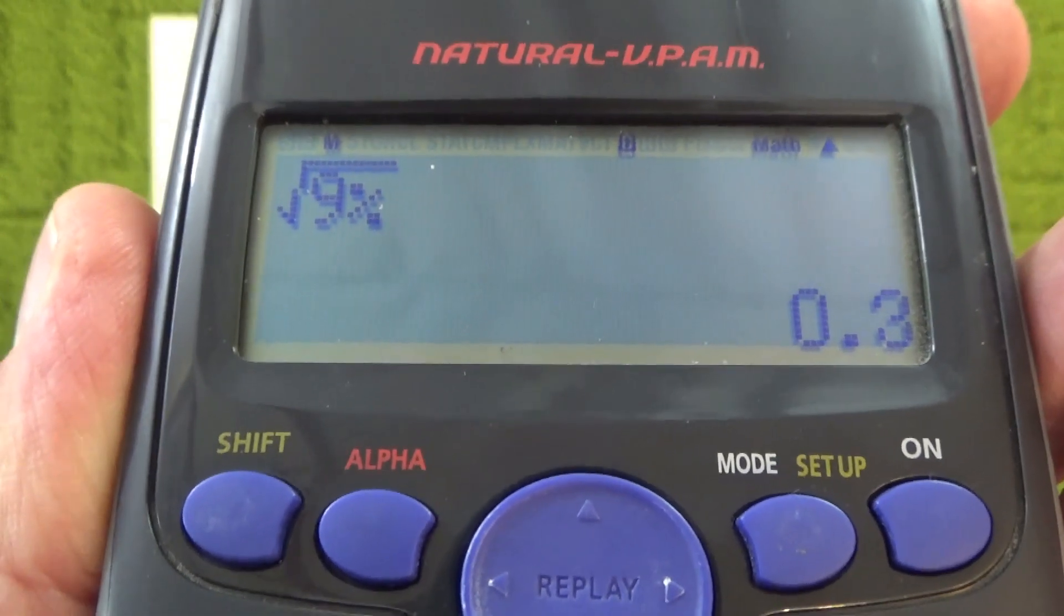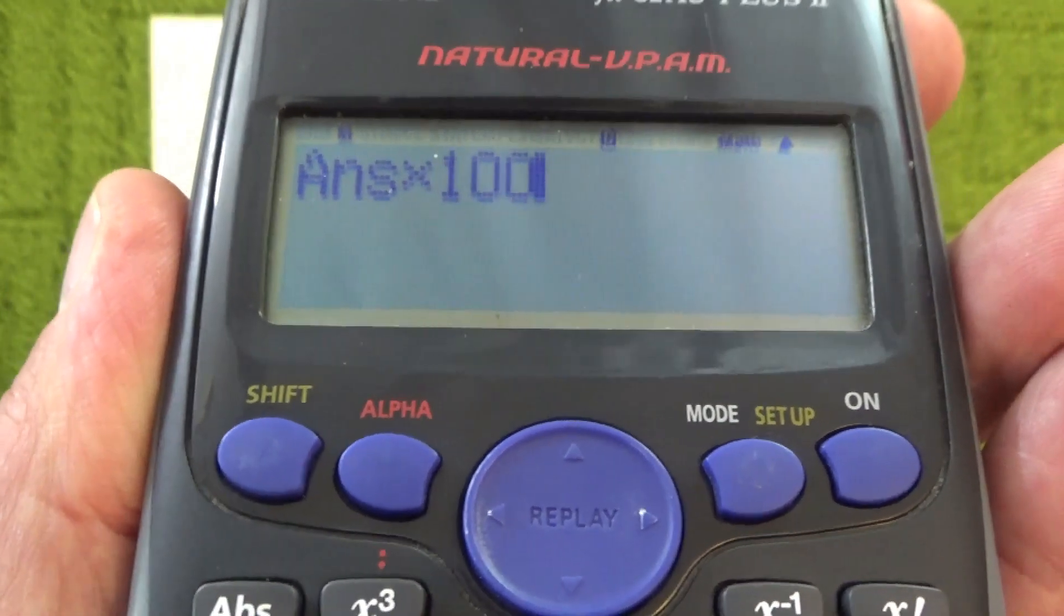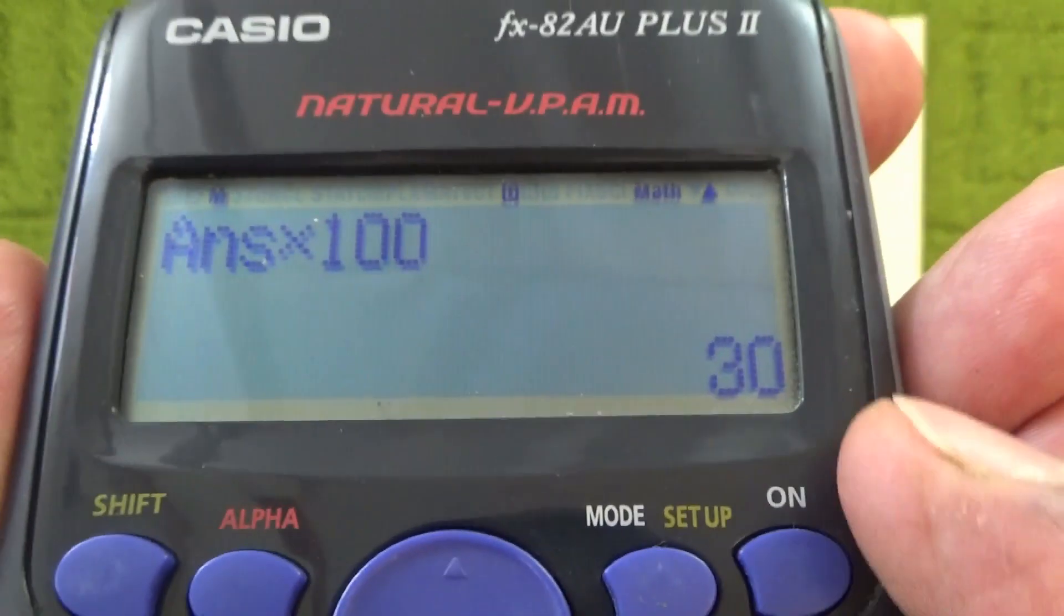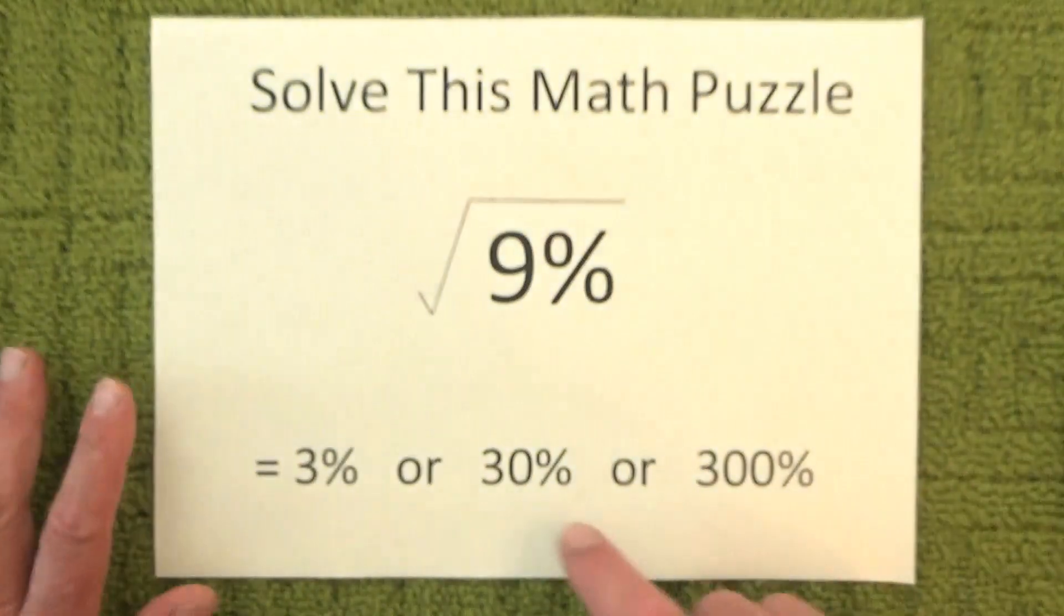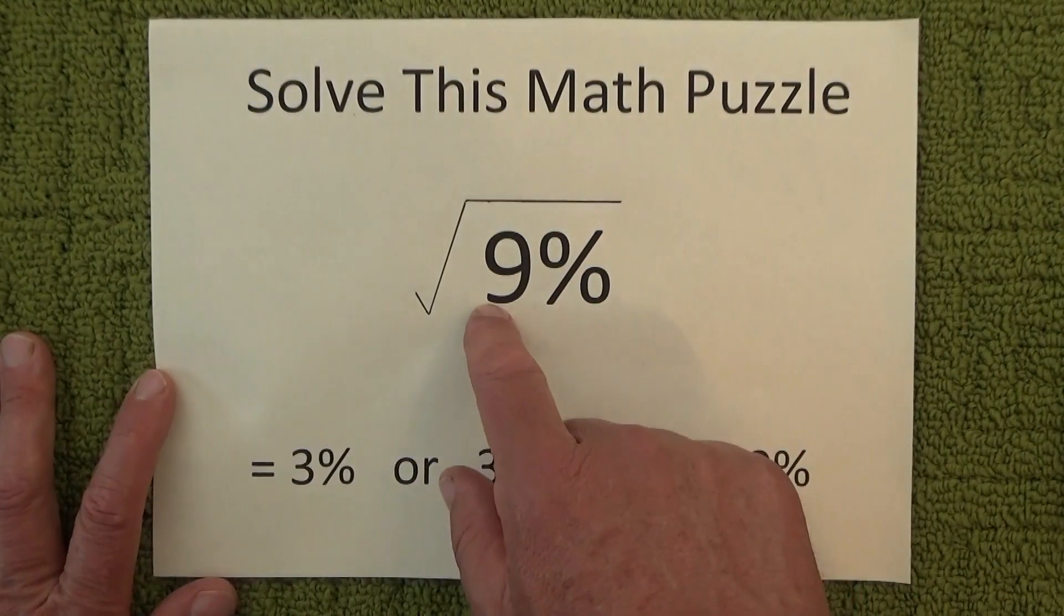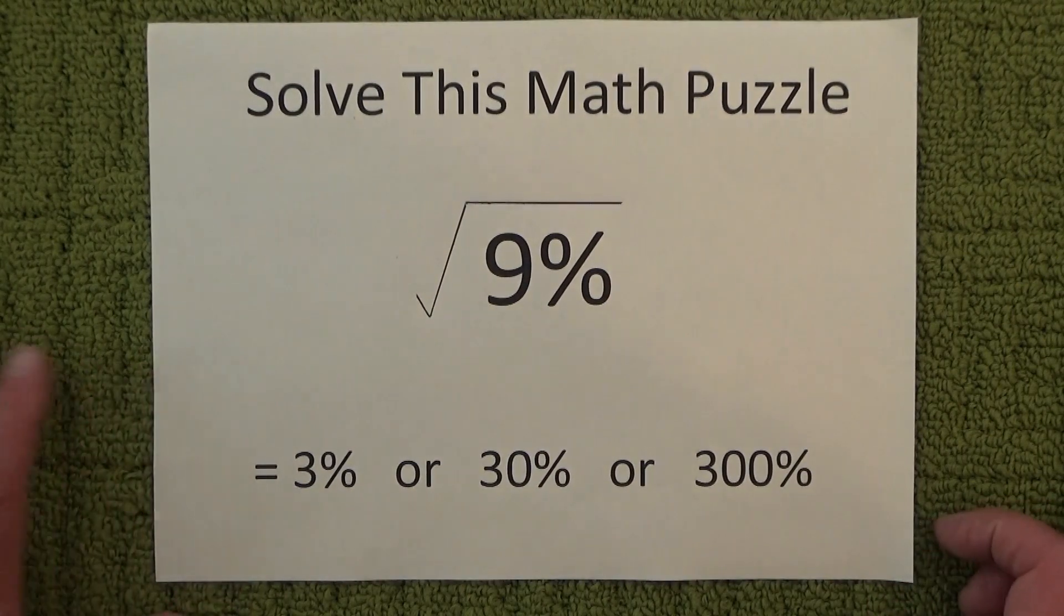And to convert from a decimal to a percentage, I multiply that by 100 and that gives me the answer of 30%. So there we go. The square root of 9% is actually 30%.